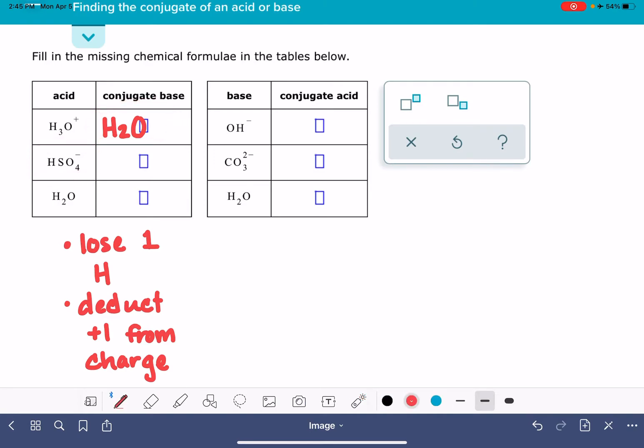For HSO4-, again, we want to lose one of the hydrogen atoms. So that hydrogen atom is no longer going to be there. It's just going to be sulfur and four oxygens. And also we want to deduct plus one from the charge. We're starting with a minus one charge and we want to deduct from that. So that means we're going to end up with a minus two charge.